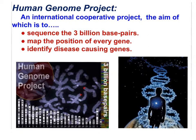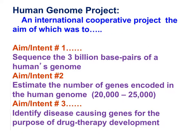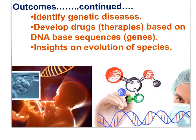The Human Genome Project was completed in 1999–2000. The first aim was to sequence the 3 billion base pairs. The second aim was to estimate the number of genes, now known to be between 20,000 and 25,000. The third aim was to identify disease-causing genes for drug therapy development, and to provide insight into evolutionary histories of different species.